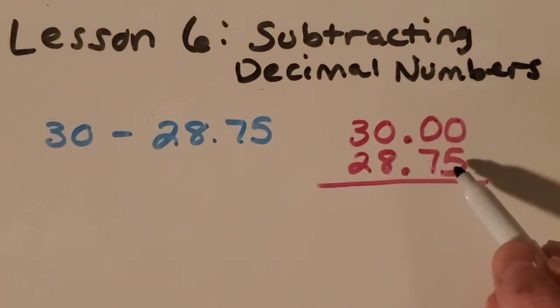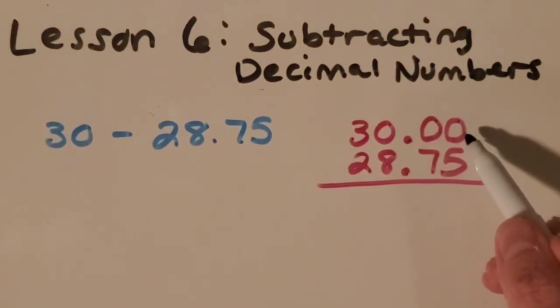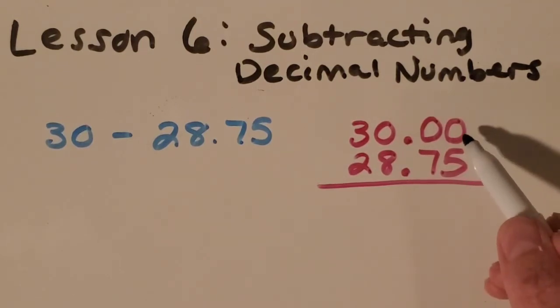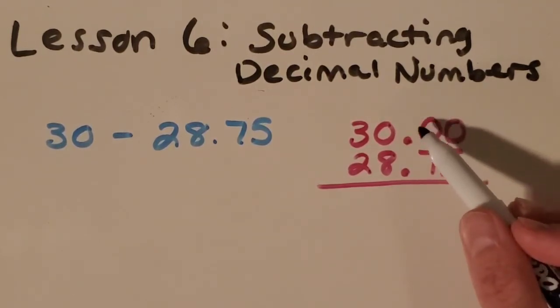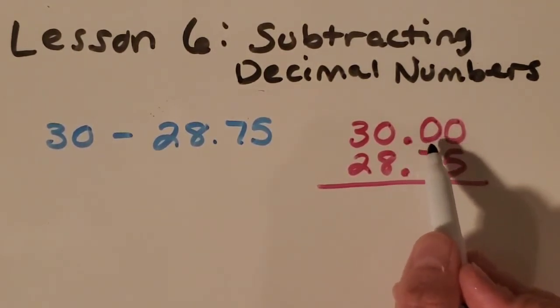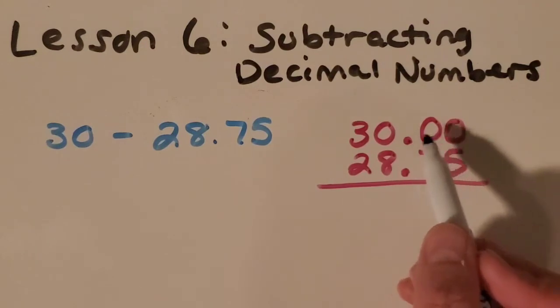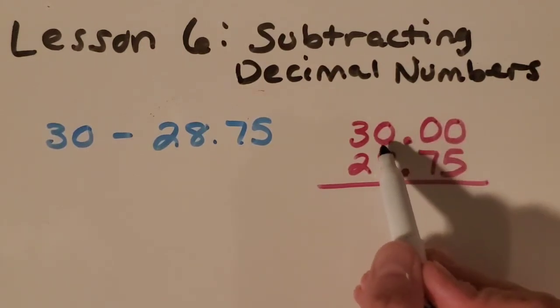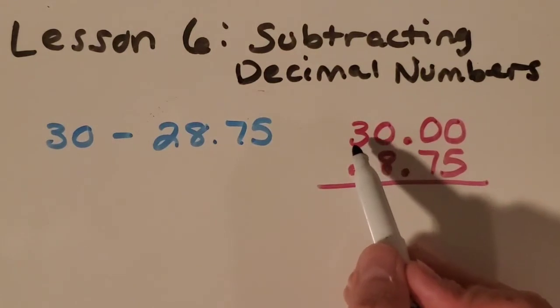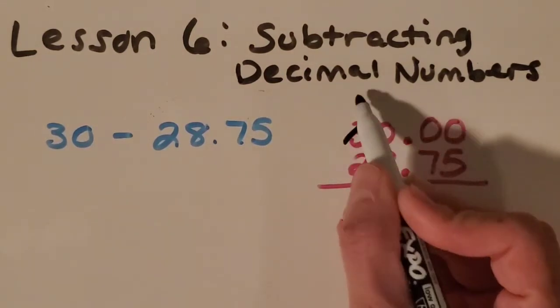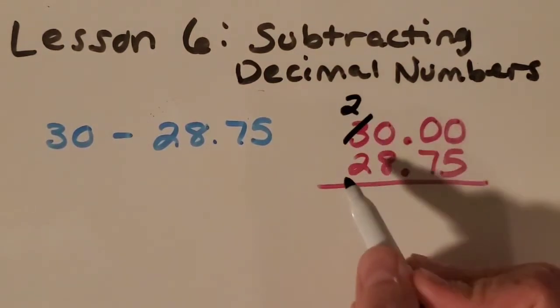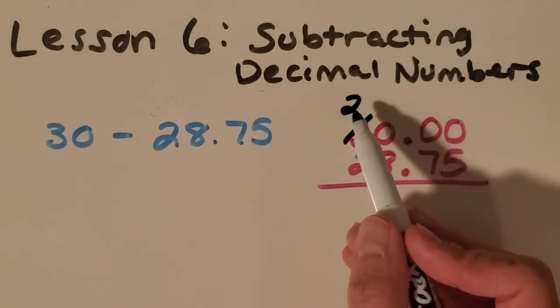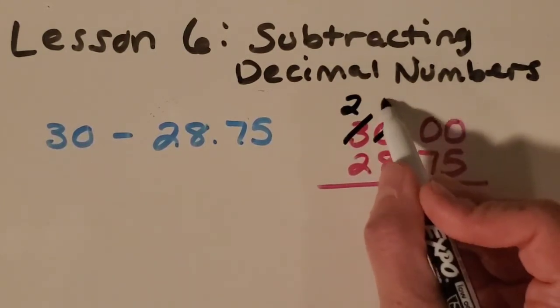I know there's a problem here because I don't have enough to take away five from zero. So I need to go to the next place value. I don't have any tenths to regroup, and I don't have any ones to regroup. But I do have three tens. So I'm going to take one of those. I'll do one step at a time. I can break up a ten into ten ones.